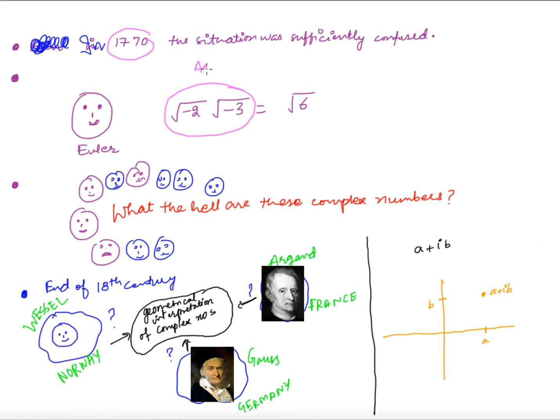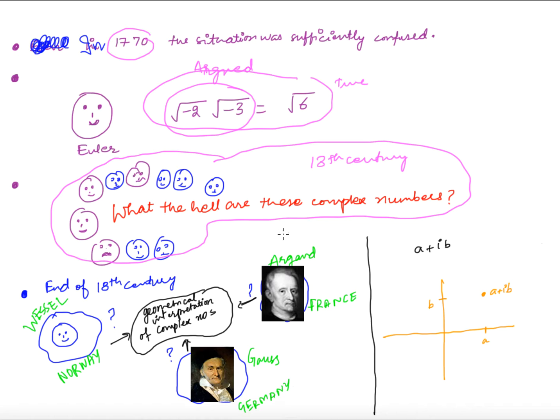Till the end of the 18th century, everybody was confused about what complex numbers were. From 1545 to around 1800 — almost 250 years — complex numbers did not get any meaningful interpretation.